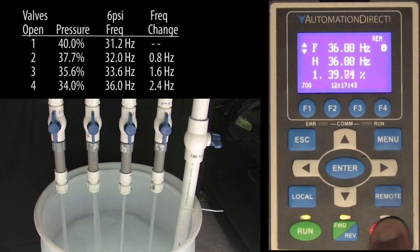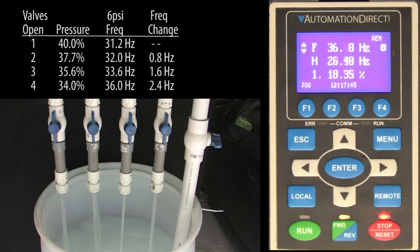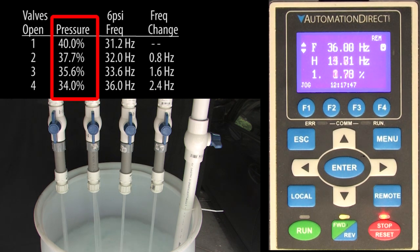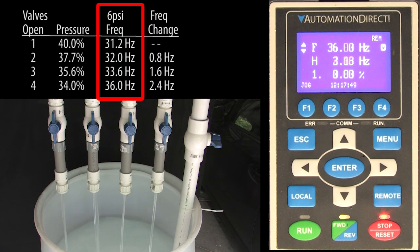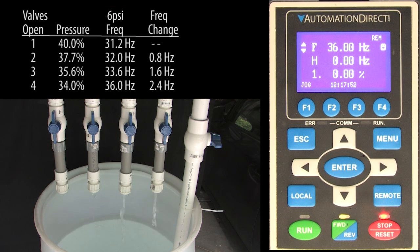So, we just manually did what we want the drive to do automatically right? Every time the pressure dropped, we manually added more drive frequency to compensate. Well, that's exactly what we want the drive's PID function to do for us.